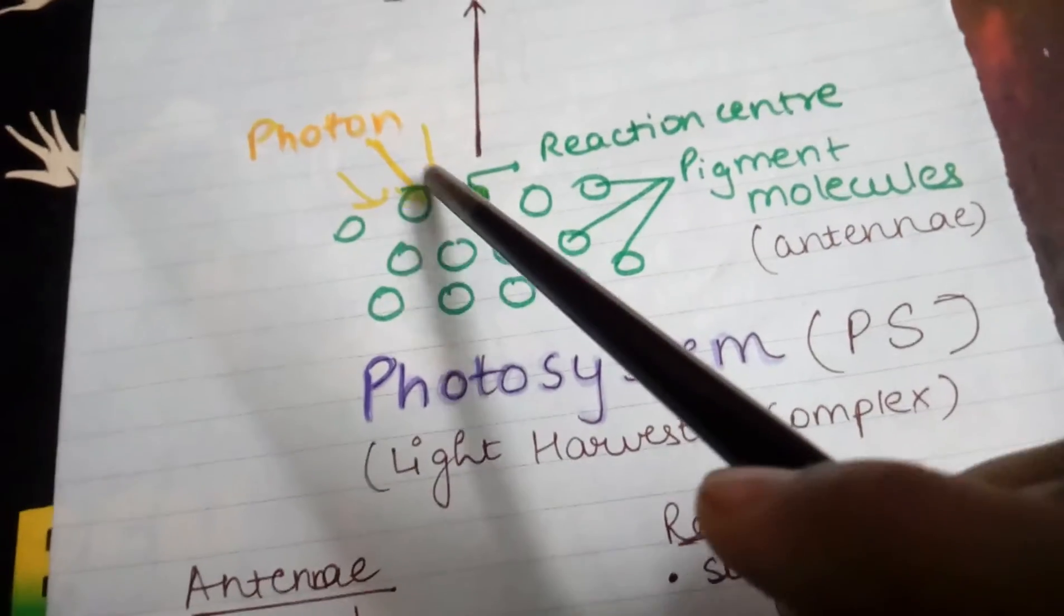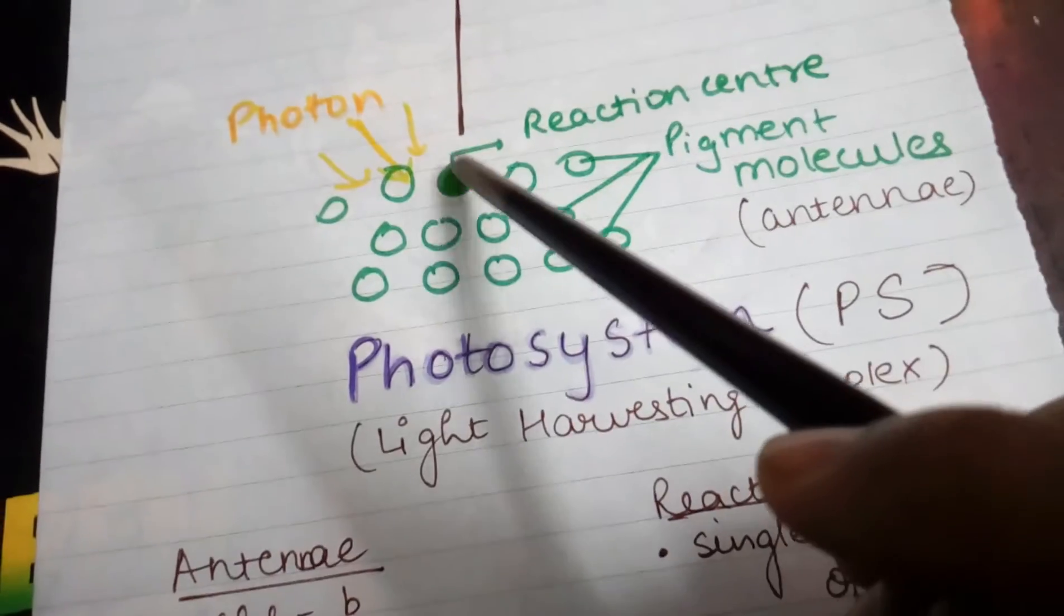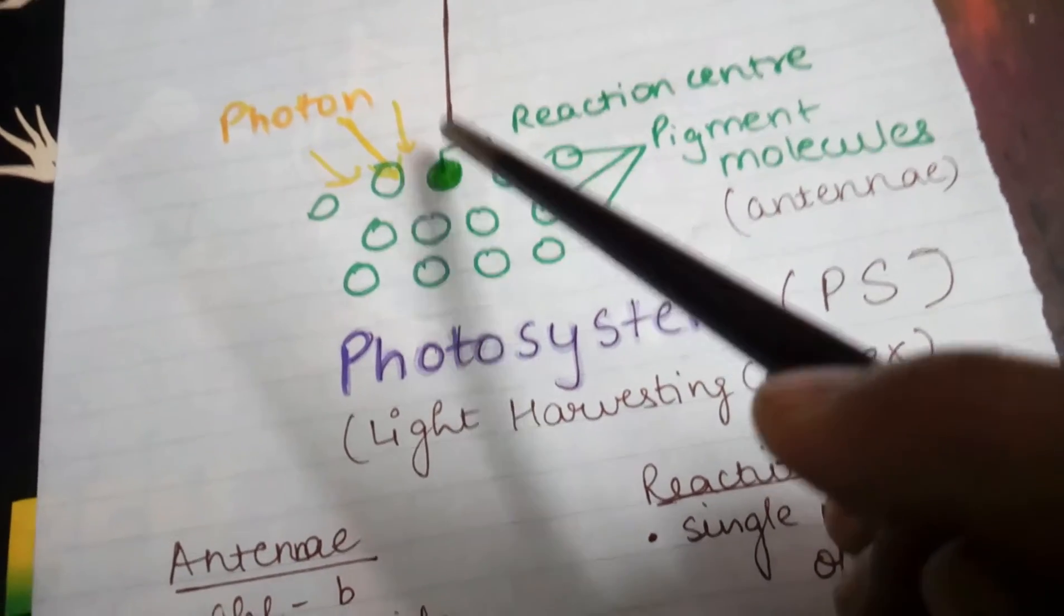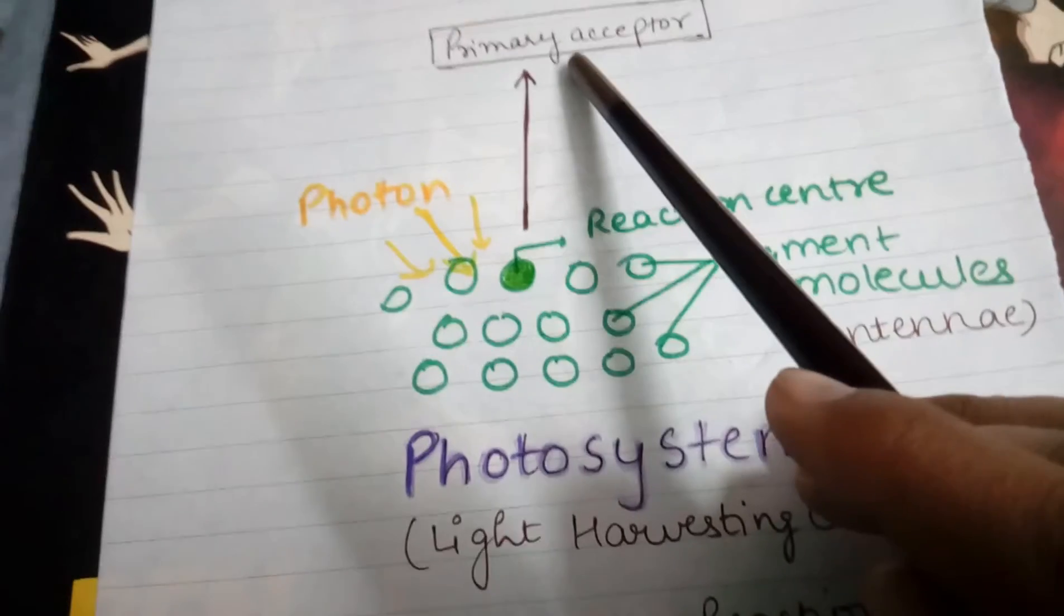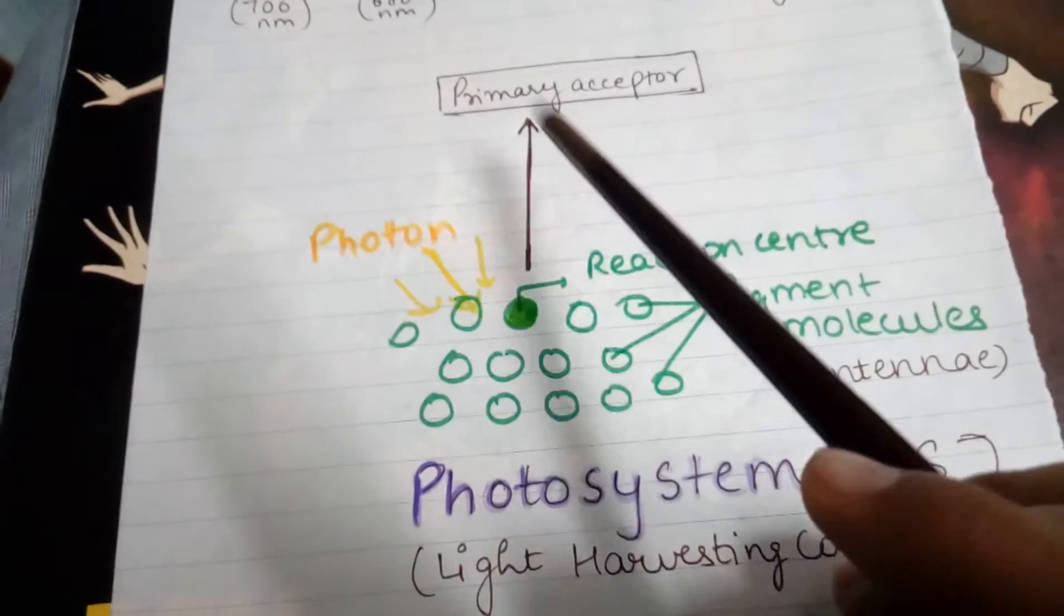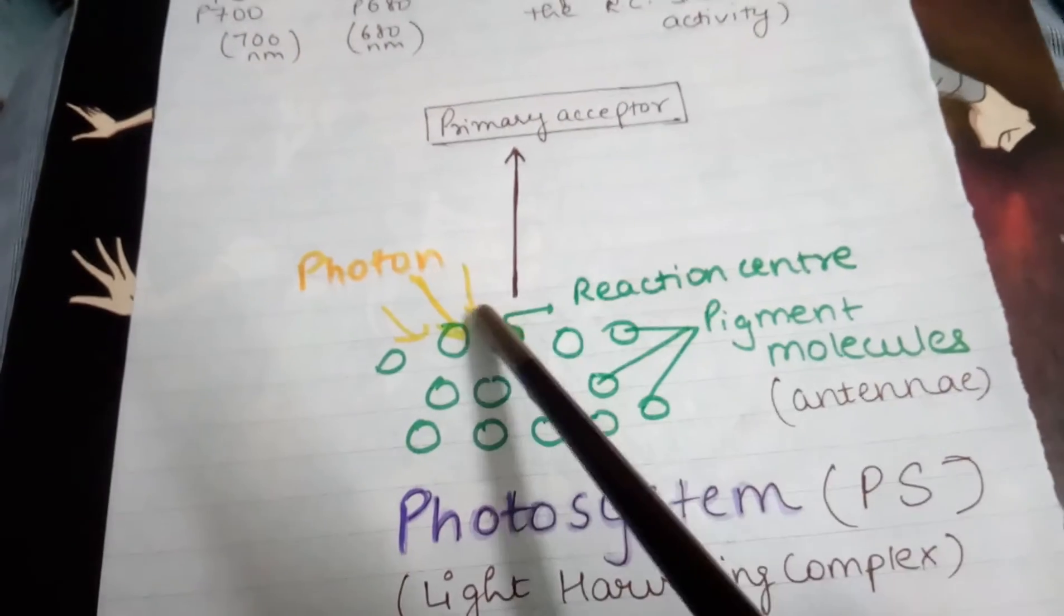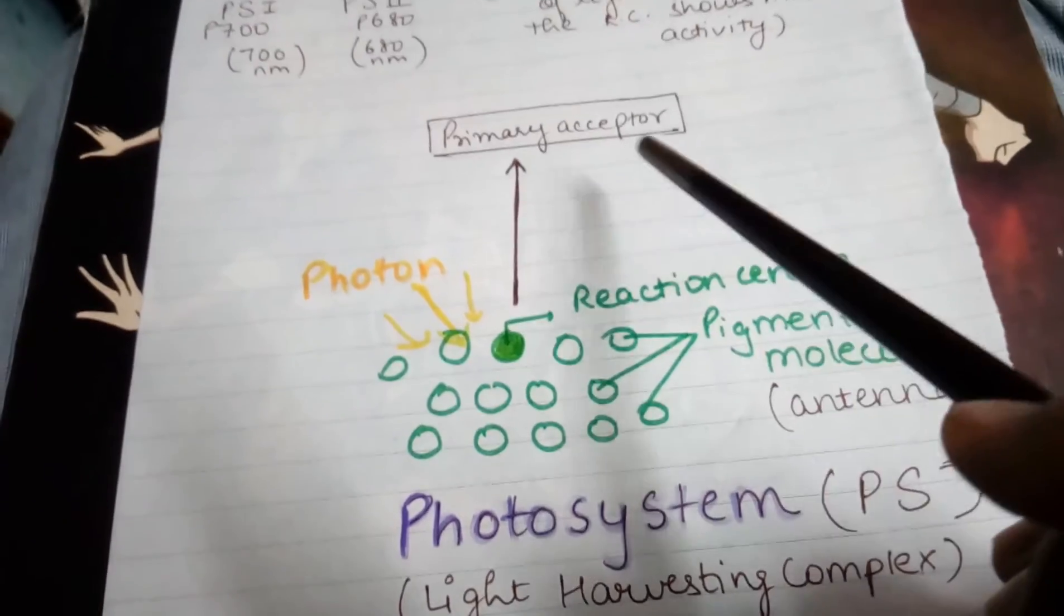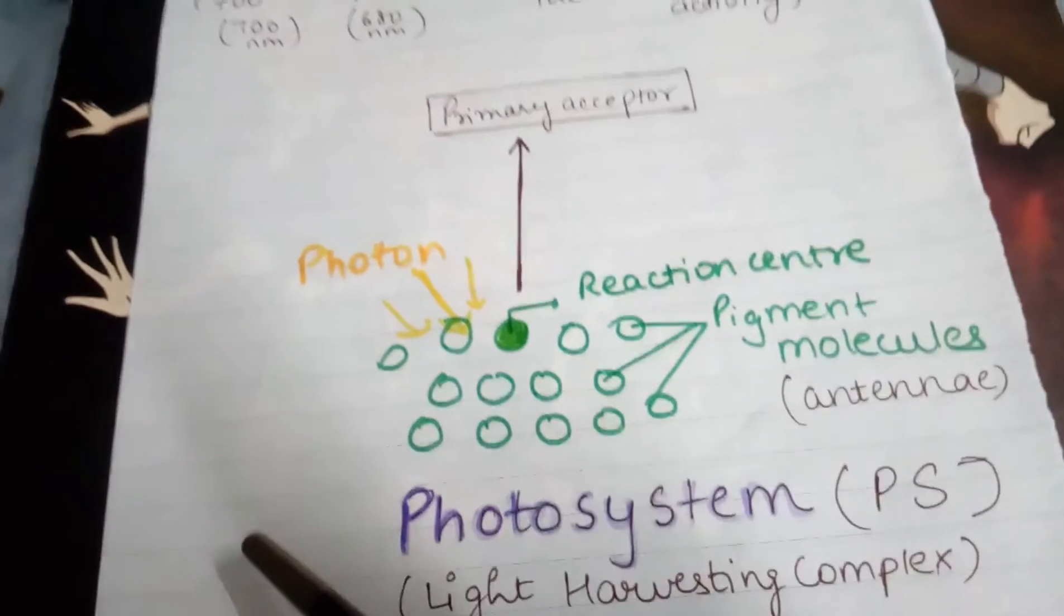The reaction center absorbs photons and emits electrons. Electrons escape from their respective orbits and go to the primary acceptor of electrons. This step is also part of photophosphorylation, which we'll discuss in the next video.